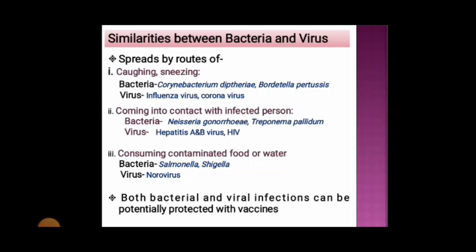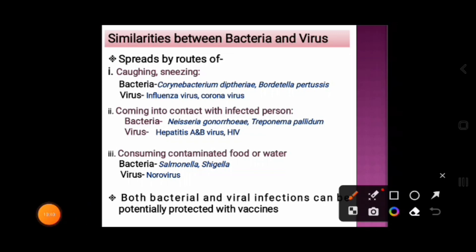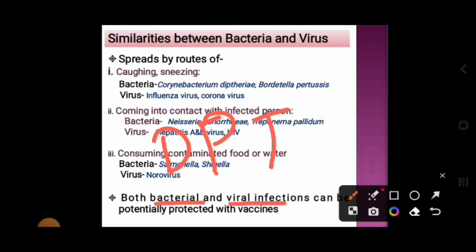Both bacterial and viral infections can potentially be prevented with vaccines. The vaccine that protects against bacterial infection is DPT — diphtheria, pertussis, tetanus — which protects from diphtheria, whooping cough, and tetanus. The vaccine that protects from viral infection is MMR, which protects from measles, mumps, and rubella.